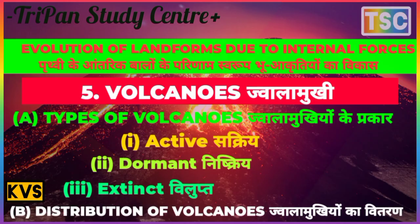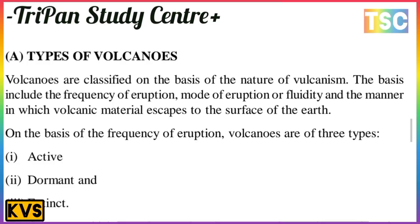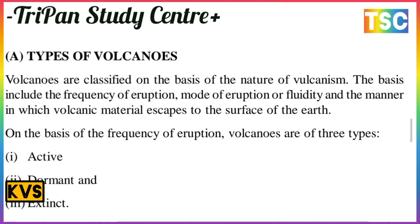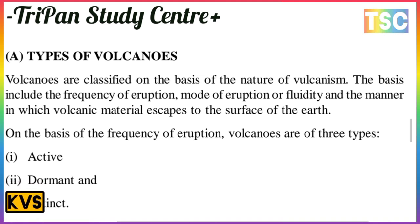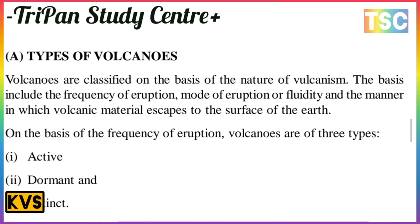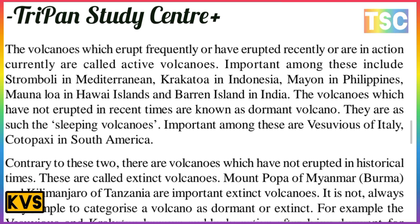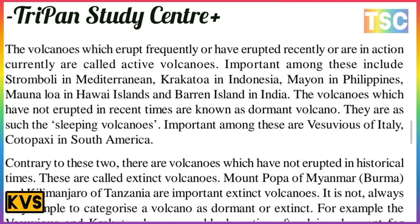Types of volcanoes: Volcanoes are classified on the basis of the nature of volcanism, including the frequency of eruptions, mode of eruption, fluidity, and the manner in which volcanic materials escape to the surface. On the basis of the frequency of eruptions, volcanoes are of three types: active, dormant, and extinct. The volcanoes which erupt frequently or have erupted recently or are currently in action are called active volcanoes.